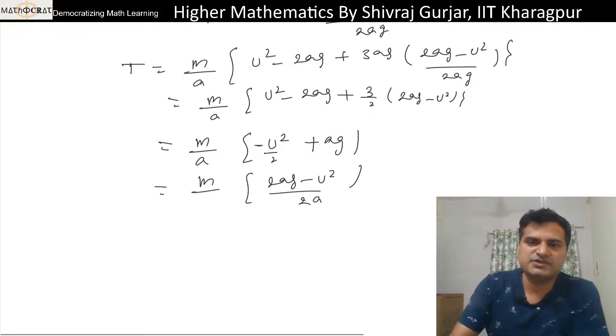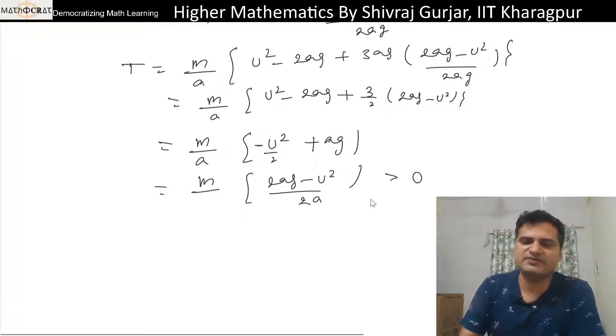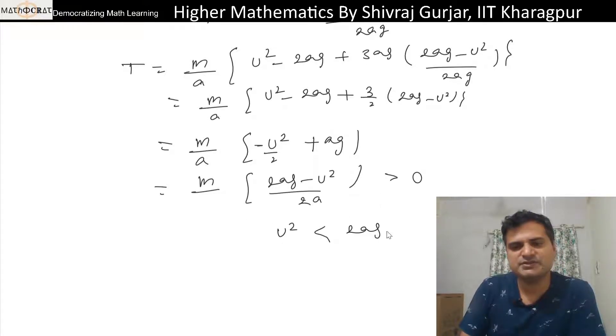So this is the expression but this is not equal, tension will be greater than 0. Not equal but greater than 0. So if this is the case means u² will be less than 2az or u will be less than √(2az).